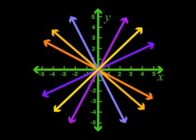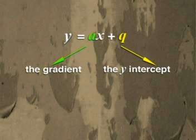Have a look at all these straight line graphs. They all represent linear functions. What can you tell us about them? If I remember correctly, each of them has a formula that fits the form y equals ax plus q, where a is the gradient and q is the point where the graph cuts the y-axis.